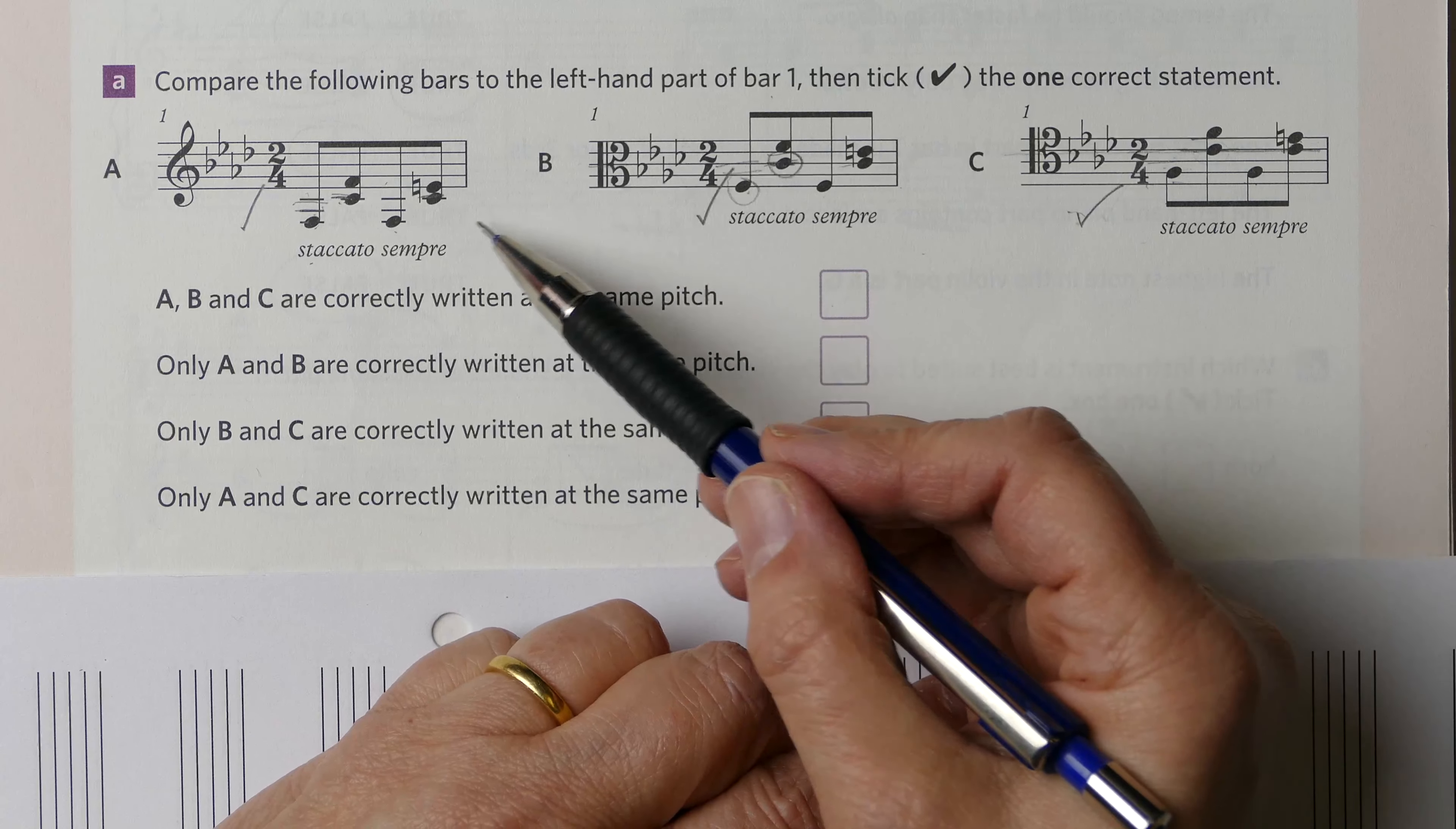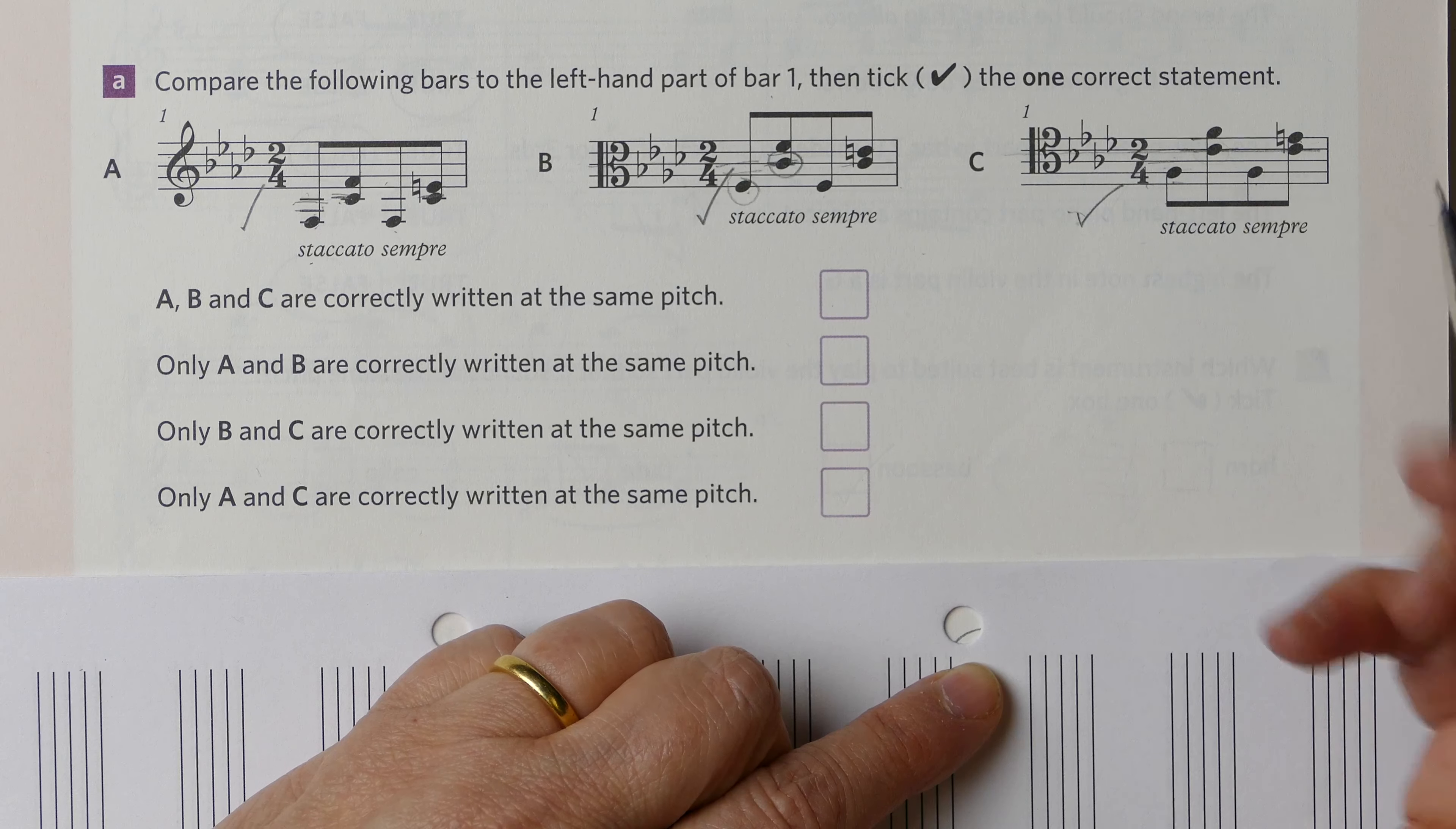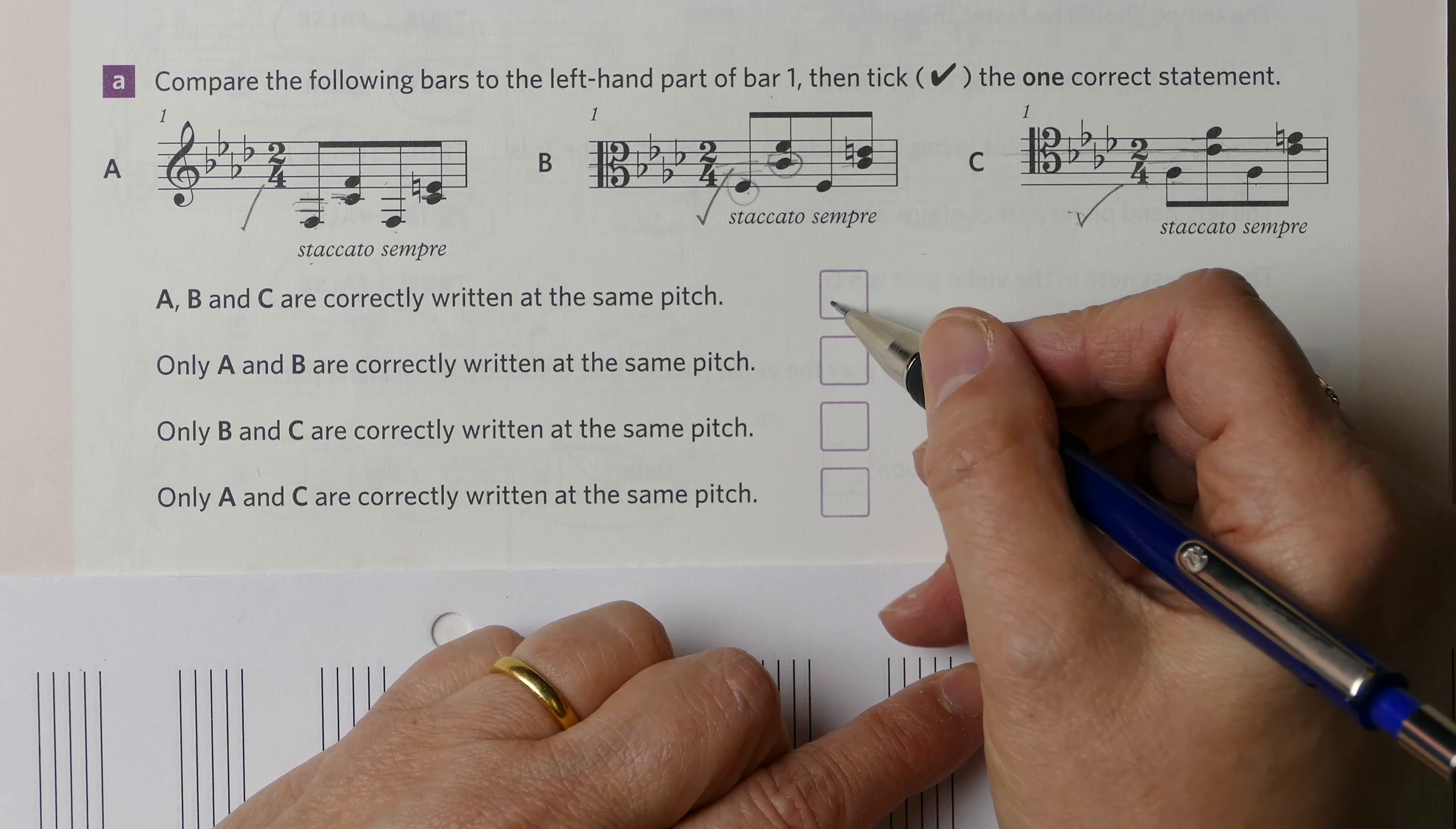That's the same again. Then we have middle C again with E natural, which is exactly the same. So actually, all three—A, B, and C—are all written correctly at the same pitch. Let's move on.